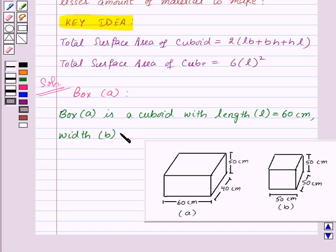Width, that is B, is equal to 40 cm, and height, that is equal to 50 cm, and height is represented by H.